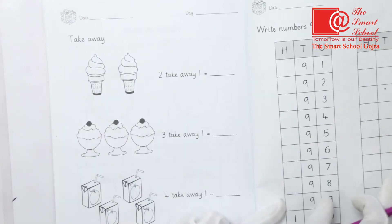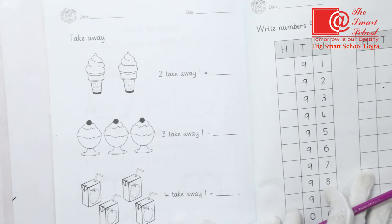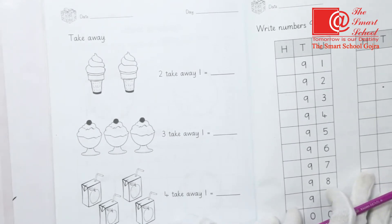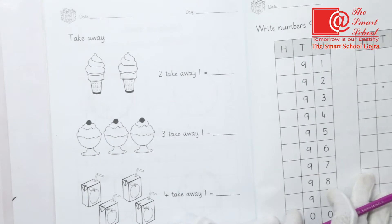First of all, write the date here and day here. Our today's topic is Take Away. Before this you had Addition, in which you had to add things — numbers, objects. We had to add and collect them. Today we will do Take Away. Take Away means Subtraction.